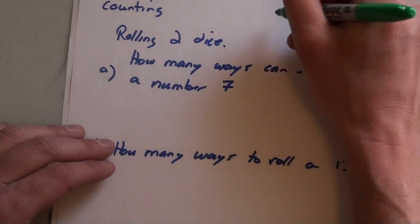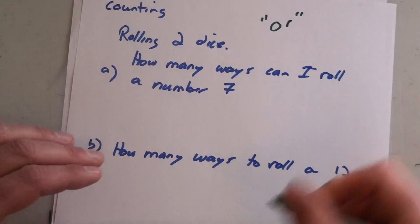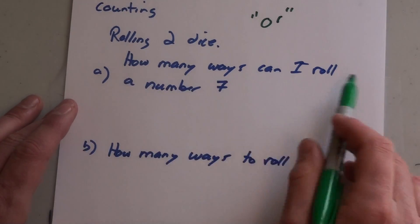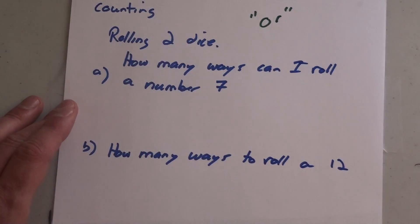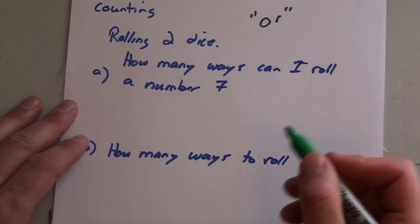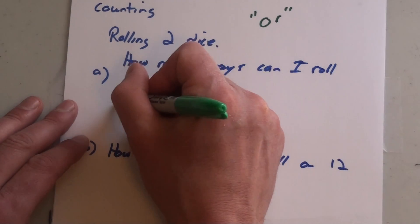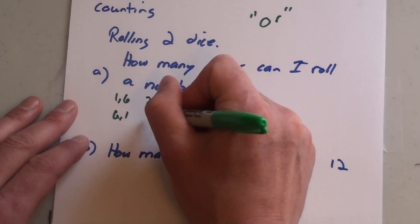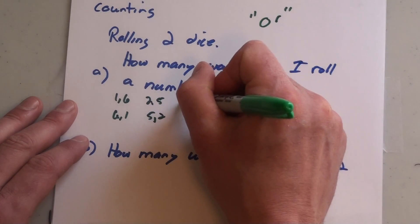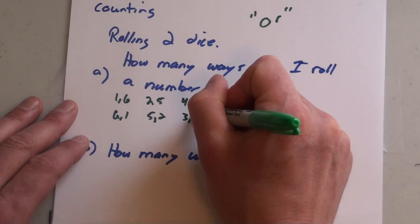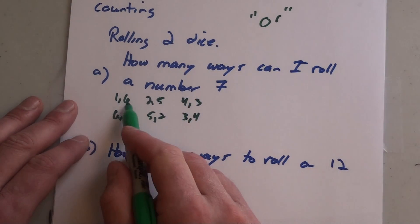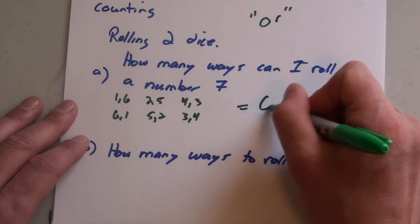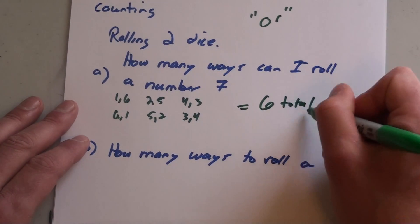Now sometimes you have OR questions where it can be this or it can be that, and you have to add them up. For example, how many different ways can I roll a number seven when I'm rolling two dice? It can be a one and a six, or a six and a one, a two and a five, or a five and a two, a four and a three, or a three and a four. These totals give you seven, which means there's six total ways.